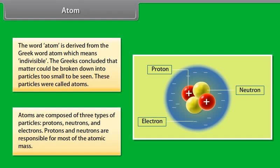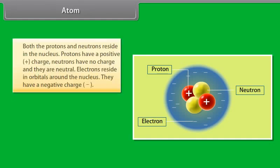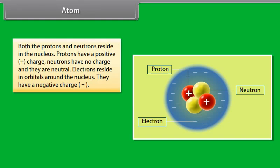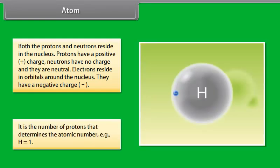Protons and neutrons are responsible for most of the atomic mass. Both the protons and neutrons reside in the nucleus. Protons have a positive charge. Neutrons have no charge and they are neutral. Electrons reside in orbitals around the nucleus. They have a negative charge. It is the number of protons that determines the atomic number. That is, H is equal to 1.